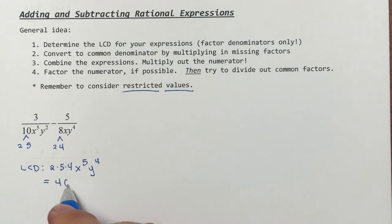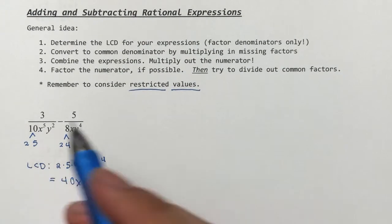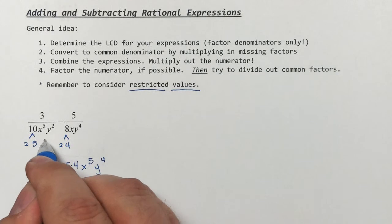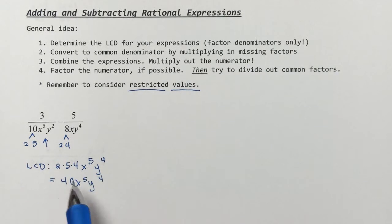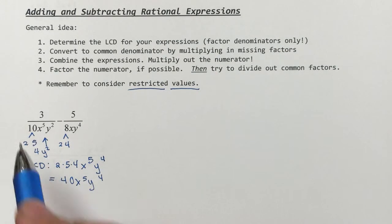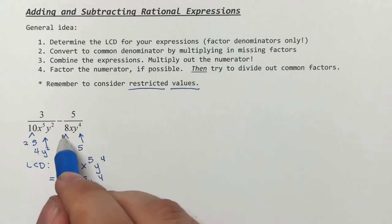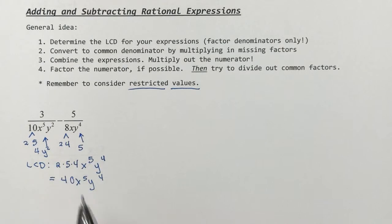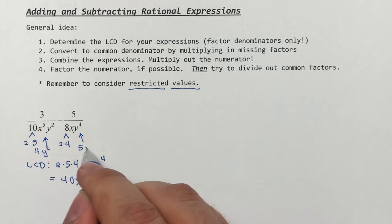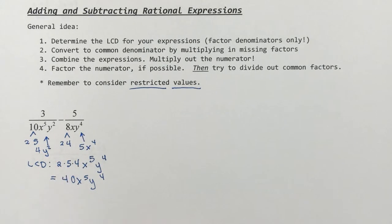Now I need to think about what each expression is missing to reach the LCD. The first expression needs y² and additionally a 4 for the 10. The second expression needs a 5 for the integer part, and additionally x⁴ to go from x to x⁵. I apologize for making my work a little bit messy and tight there.